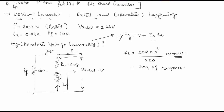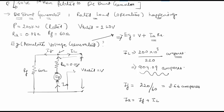The field current IF equals 220 divided by 60, which is approximately 3.66 amperes. Applying KCL at the node, the armature current IA equals IF plus IL, which equals 909.09 plus 3.66 amperes.